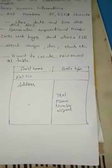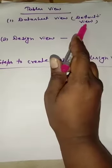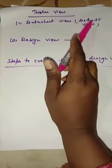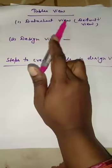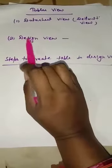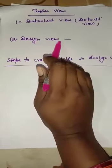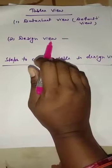Now our next topic is table views. There are two types of views. First is data sheet view, which is the default view. When we open our table in MS Access, the sheet will open in data sheet view. Second is design view, in which we will create tables. Design view is used to create and modify tables in MS Access.